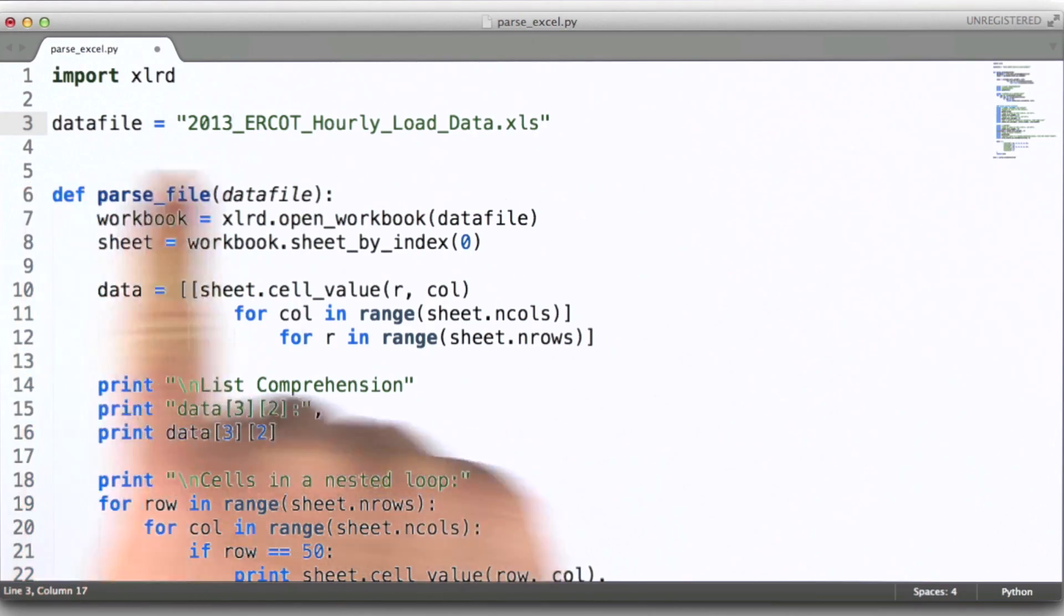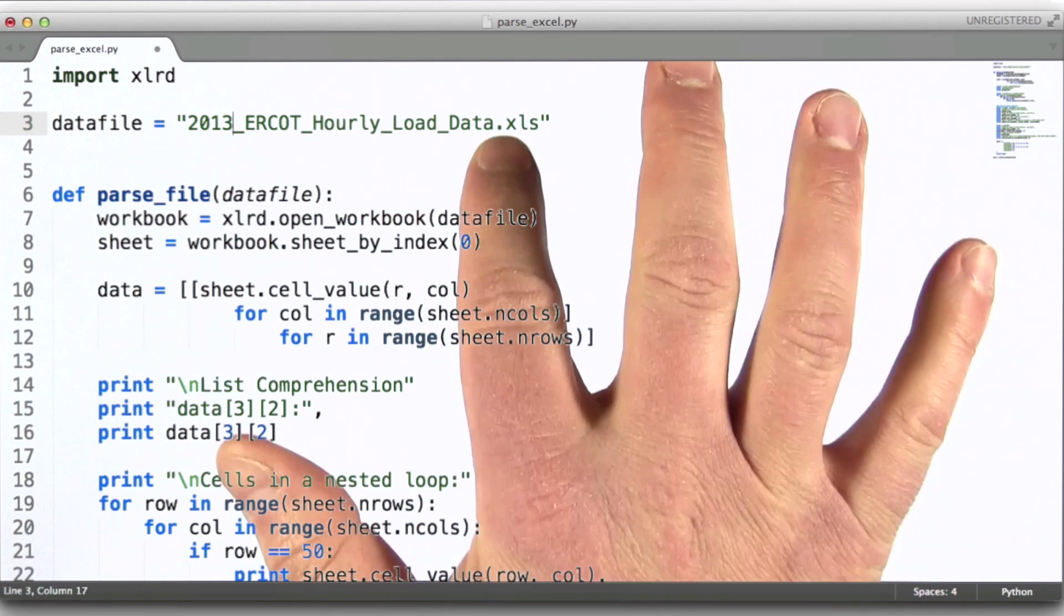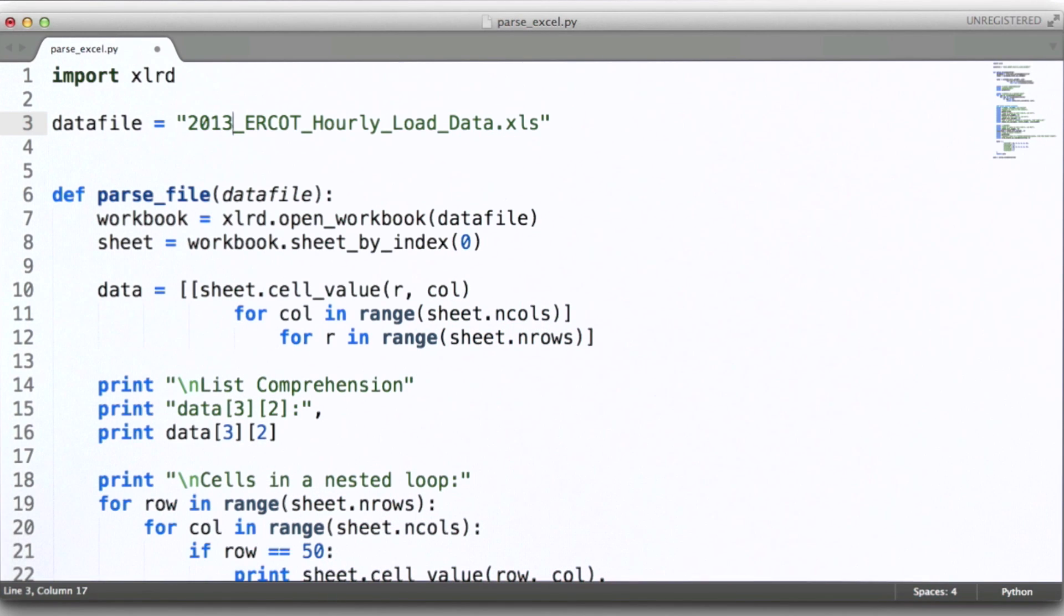Here we're simply specifying which file it is that we're going to load. In this case it's an XLS file, an old format Microsoft Excel file. And then the bulk of the work that we're doing here is actually done in the parse_file function.